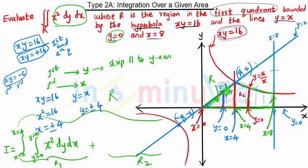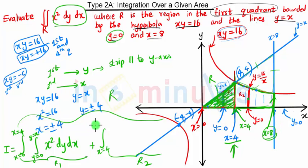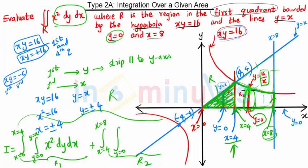Up to this point we have a line, then we have a curve, so this is the separate region R2. Here x is going from x equal to 4 as the lower limit to x equal to 8 as the upper limit. For region R2 the limit of y goes from 0 to 16 by x, which is the hyperbola.